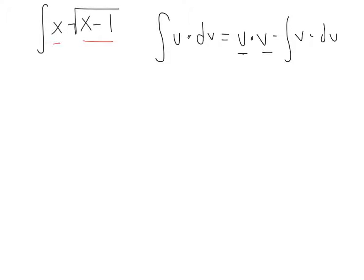And how we decide which is which is a little thing called LIATE. So LIATE is logarithmic, inverse, algebraic, trig, and exponential.